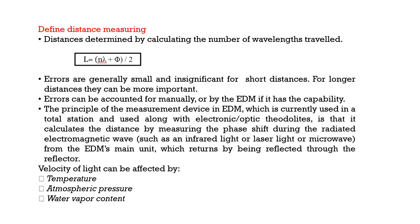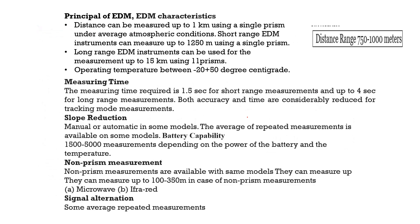Distance equals n times lambda plus delta divided by 2. Errors are normally smaller for shorter distances, and longer distances will have larger errors. The velocity of light can be affected by temperature, atmospheric pressure, and water vapor content. For EDM, the distance can be measured up to 1 km, with a distance range of 750 to 1000 meters, or up to 15 km using 11 prisms. Operating temperature is minus 20 to plus 50 degrees centigrade.